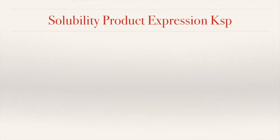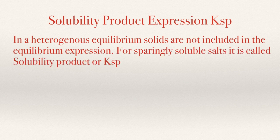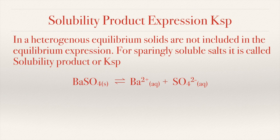When we talk about solubility product expressions, we are also talking about mostly insoluble compounds in water. Whenever you have a double displacement reaction and get a precipitate, it indicates that one of the compounds has low solubility. We used to call them insoluble, but when talking about solubility product, we prefer to call them sparingly soluble salts, which implies that some of those compounds are actually soluble to a very small extent. We write the reaction with the sparingly soluble substance as the reactant and the ions formed in solution as products. The expression is called the solubility product expression, or Ksp, written as the product of the concentrations of the ions raised to their appropriate coefficients — in this case, [Ba²⁺] raised to 1 times [SO₄²⁻] raised to 1.